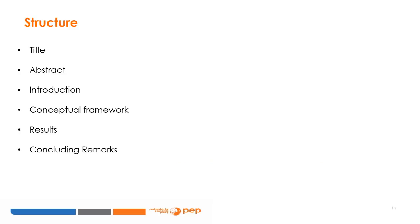Given the caveats discussed in the preceding slides, here's what I consider to be a standard structure of an economics research paper. It should include the title, the abstract, an introduction, a conceptual framework (the structure depends on the type of paper), the results, and concluding remarks.